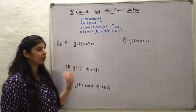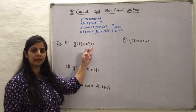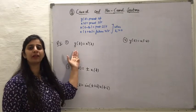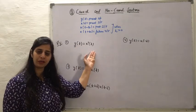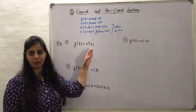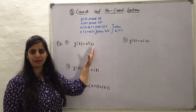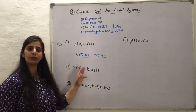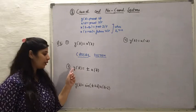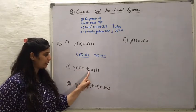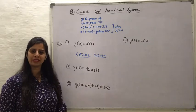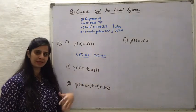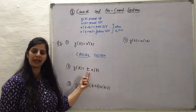Let us now see some more examples. In the first example, y(t) = x²(t), which means the present value of output is dependent upon the present value of the input, so this is a causal system. In the second example, the output is related to the input by y(t) = t · x(t). Here x(t) is the input signal and the system is multiplying the input signal with time t.